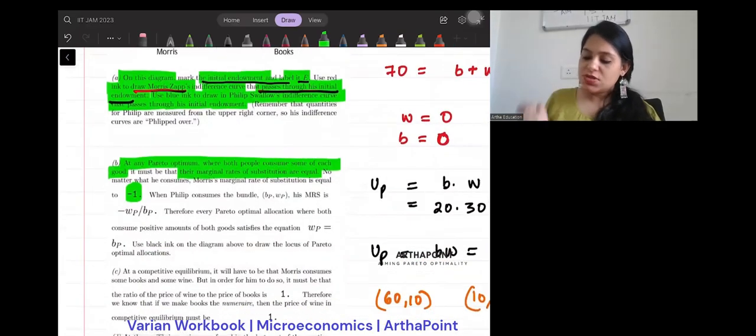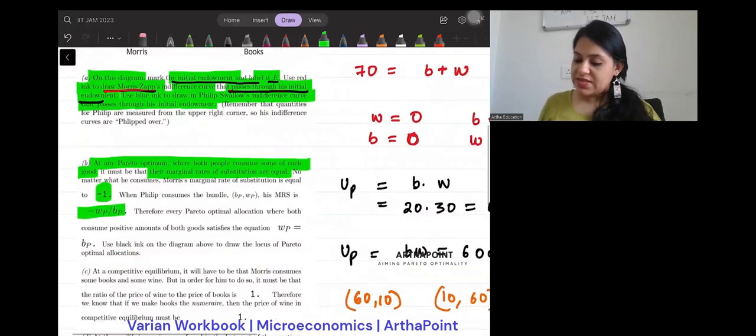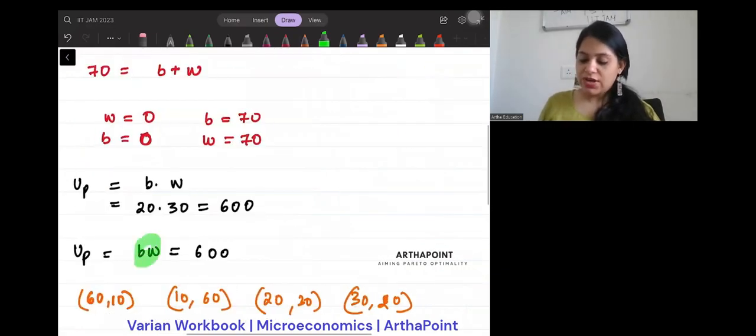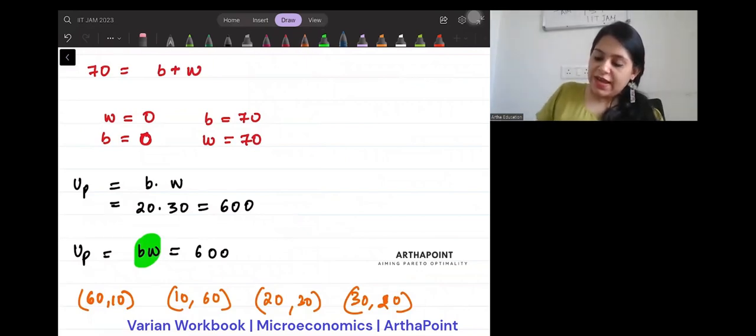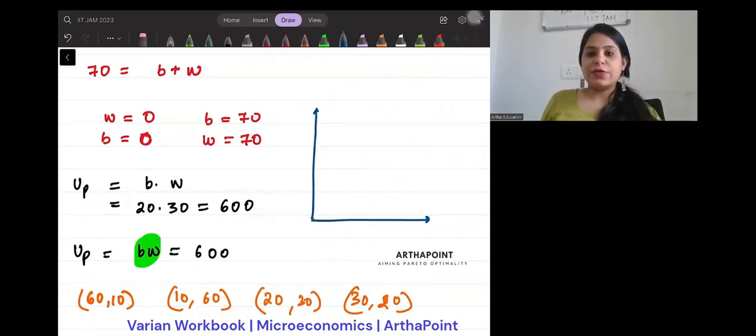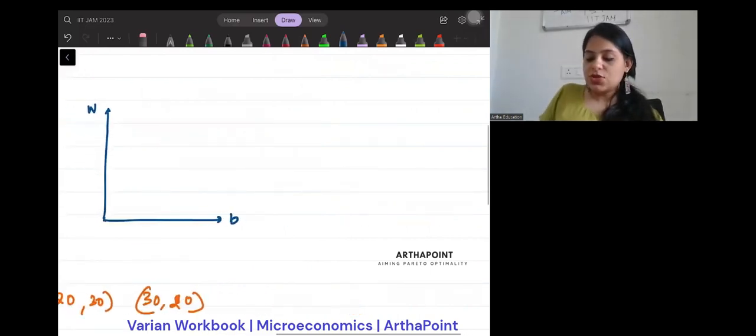So when Philip consumes the bundle, his MRS is minus W by B. And this is exactly what we found out. So if utility function of Philip is BW, and if I have W here and I have B here,